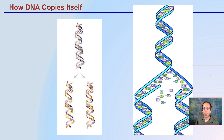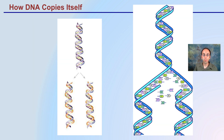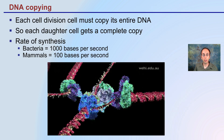So how does DNA copy itself? It uses the original strand as a template. Starting from the double helix, it separates the strands and uses that original strand as a template — which is very important, because using a template greatly reduces the chance of any errors being made.